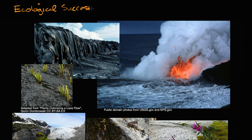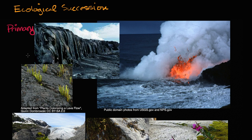Folks will often talk about the different types of ecological succession, splitting it up into primary ecological succession. Primary is when you start with no life, because you really have a new habitat, and then slowly life colonizes it. One of the best examples of that is when new land forms due to lava flows. These are pictures from Hawaii, where new land is forming as this lava hardens.